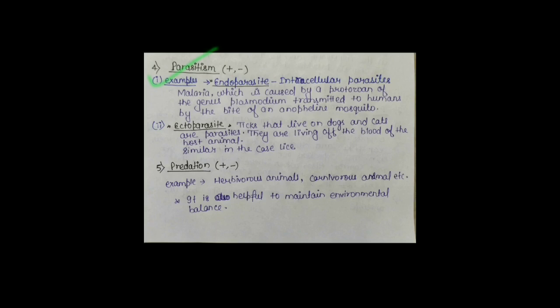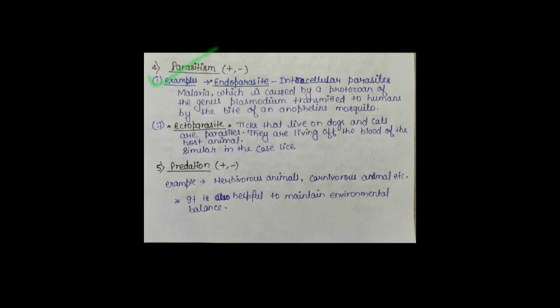अब next हम लोग देखते हैं interaction that is Parasitism। Parasitism में एक को फायदा होता है और दूसरे को नुकसान होता है। पहला example — Endo-parasite: Intracellular Parasite जो Cell के अंदर काम करता है। जैसे Malaria — Malaria cause करता है Protozoan of the genus Plasmodium, transmitted to Human by the bite of Anopheles Mosquito। तो Human को Malaria हो गया — Human host को Harm हो रहा है, disease हो रहा है। But Mosquito को अपना Nutrition मिल गया — उसको फायदा हो गया। यह Parasitism का case है।